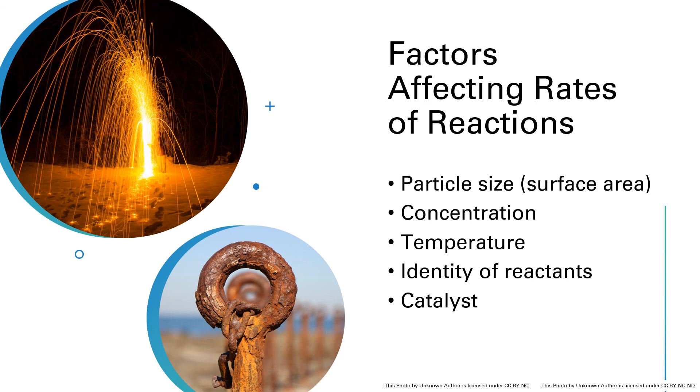The identity or the nature of the reactants also matters. We can oxidize iron and it goes potentially very slowly in the form of rust. But if instead of iron, we try to oxidize something like hydrogen, well, that reaction goes a little bit faster.